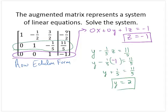And finally, using the first row, I could write that equivalently as x minus 1/2 y plus 3/2 z is negative 9/2.